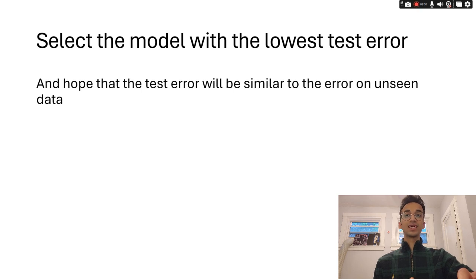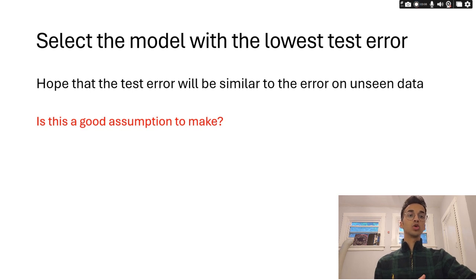So you have three models each model will be tested on your test data set whichever gives the lower error gets selected and the hope over here is that the test error that you get will be similar to the error that you would get on future unseen data. However is this a good assumption to make?